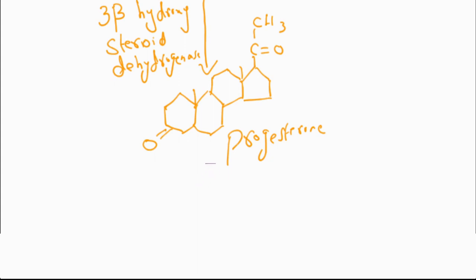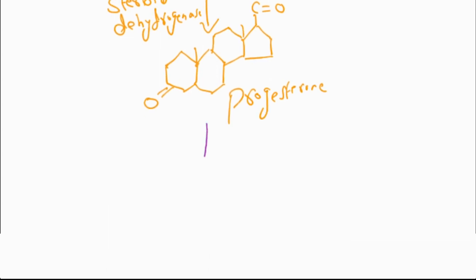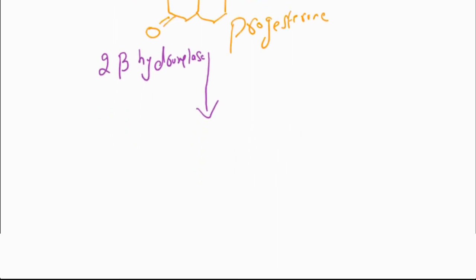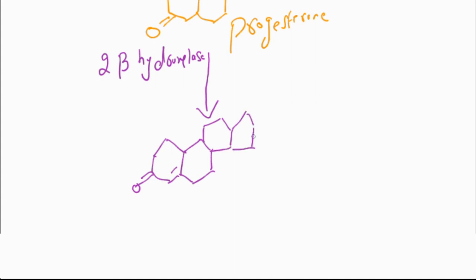Then the progesterone is further processed by the enzyme 21-beta-hydroxylase. This enzyme causes the conversion of progesterone into 11-deoxycorticosterone. I am drawing the structure of each hormone step by step.